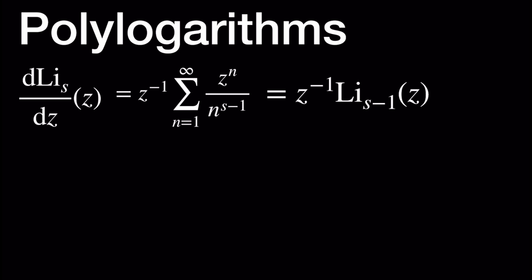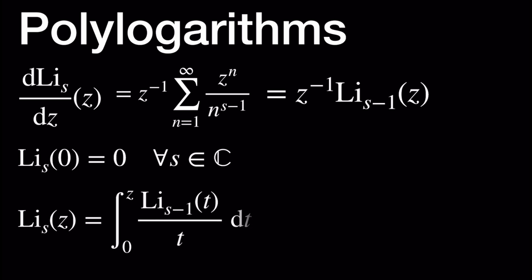We can also see that Li sub S at 0 is always equal to 0, because we have a power series and there is no constant term in our power series. Using these two identities, we deduce by integration that Li sub S at Z is equal to the integral from 0 to Z of Li sub S minus 1 at T divided by T, dT.